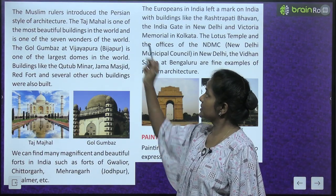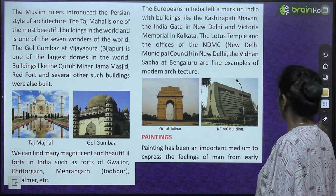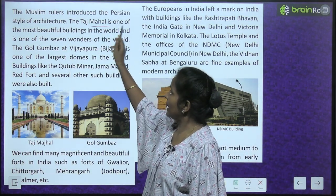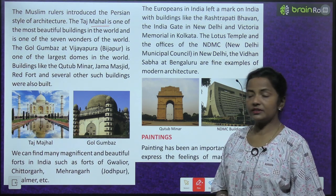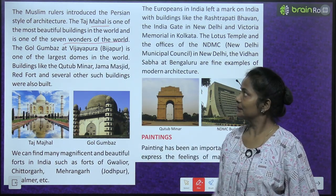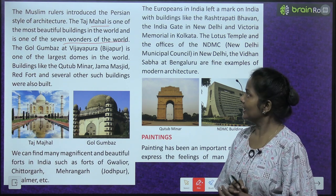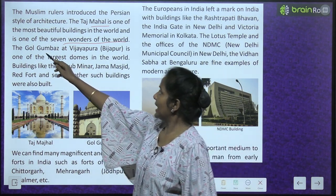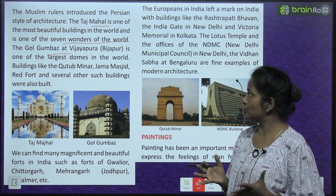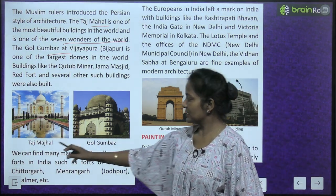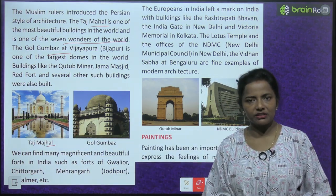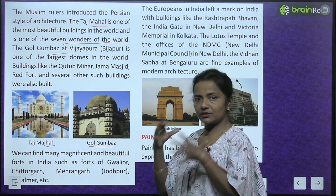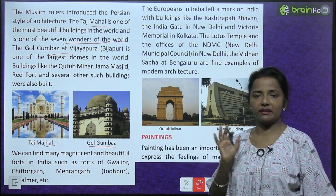The Muslim rulers introduced the Persian style of architecture. The Taj Mahal is one of the most beautiful buildings in the world and is one of the seven wonders of the world. It is also one of the largest domes in the world. Aap mein se bahut bachche ja bhi chuke honge — you must have visited the Taj Mahal. And this is Gol Gumbaz, also one of the largest domes in the world.